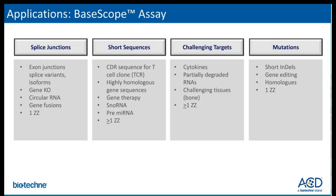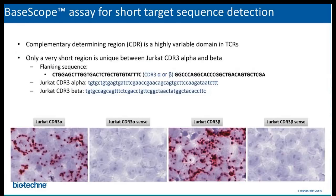Applications of the BaseScope assay include several key areas. One of the applications is detection of short sequences. For example, the CDR3-alpha and CDR3-beta sequences from the Jurkat T-cell line differ from each other by only approximately 50 nucleotides. BaseScope probes are designed to target either CDR3-alpha or beta, and the sense probe was used as a negative control.